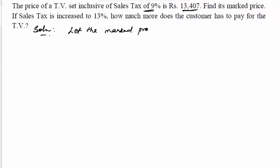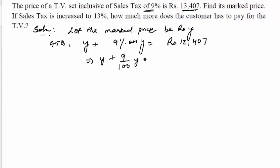Let the marked price be Rs. y. According to the question, the marked price plus the sales tax on the marked price equals the total price inclusive of sales tax. So we get: y + (9/100)y = Rs. 13,407.